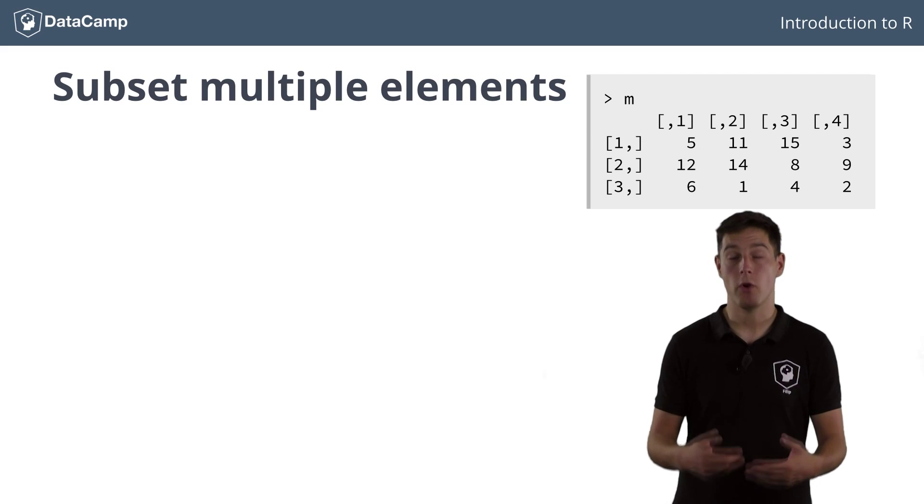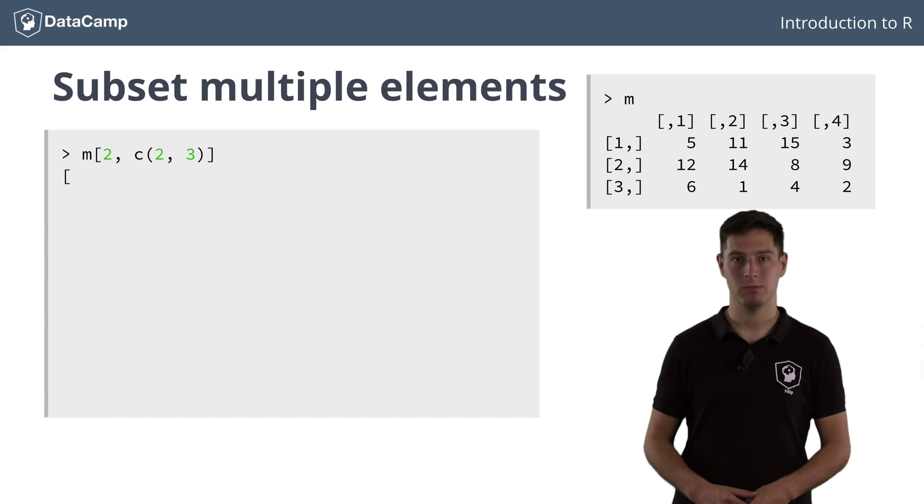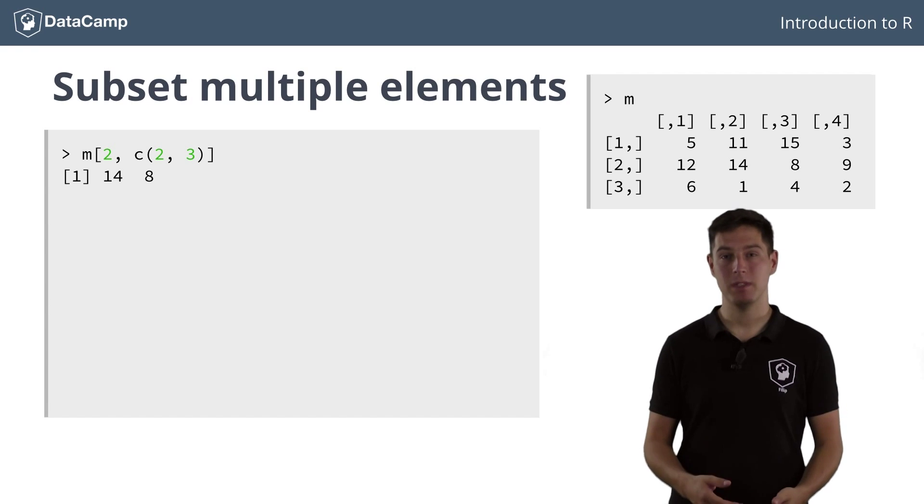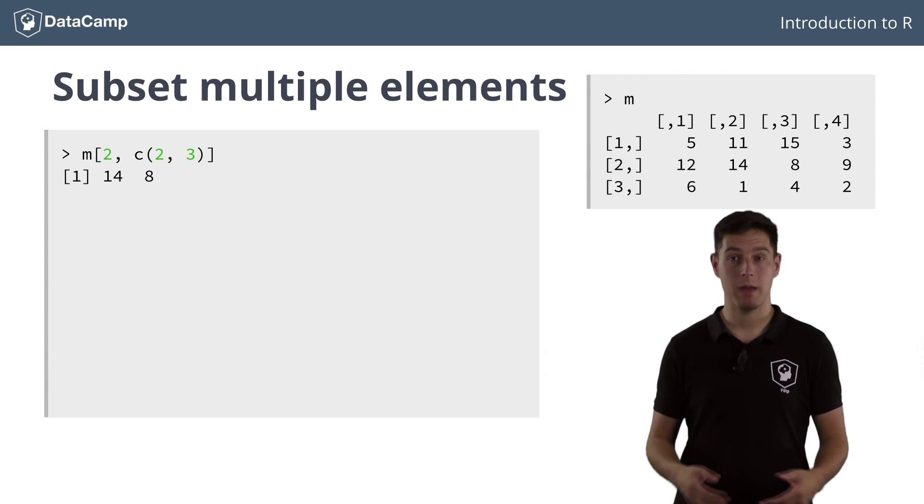In vector subsetting, you also learned how to select multiple elements. In matrices, this is of course also possible, and the principles are just the same. Say for example, you want to select a value 14 and 8, in the middle of the matrix. This command will do that for you. You select elements that are on the second row and on the second and third column. Again, result is a vector, because one dimension suffices.